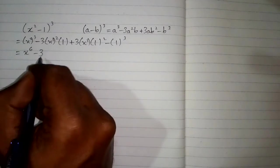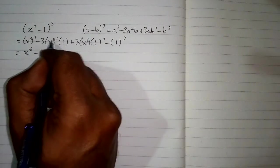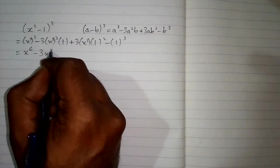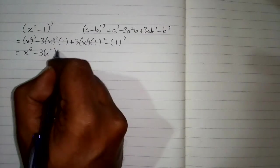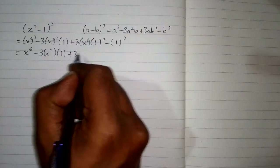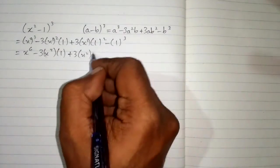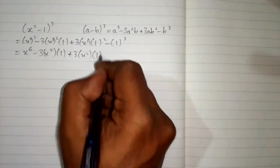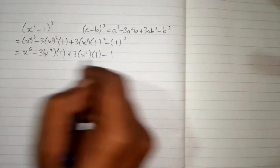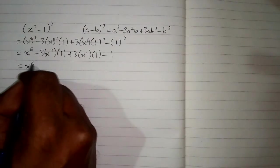So we have x⁴ times 1, plus 3 times x² and the square of 1 is 1 and cube of 1 is 1.